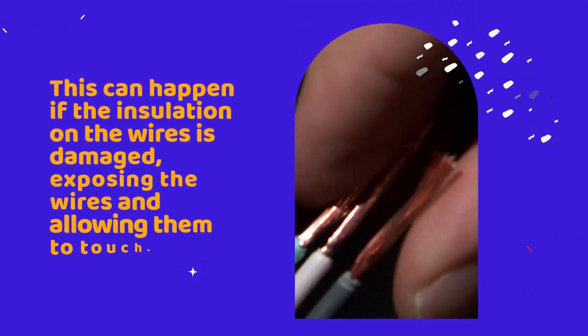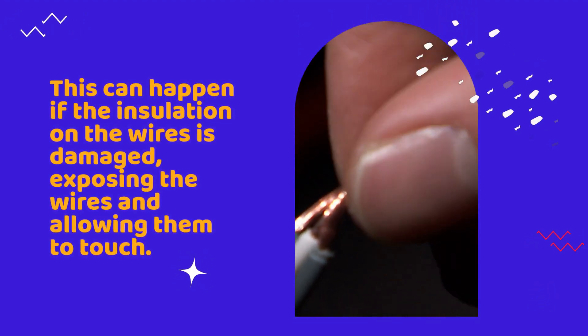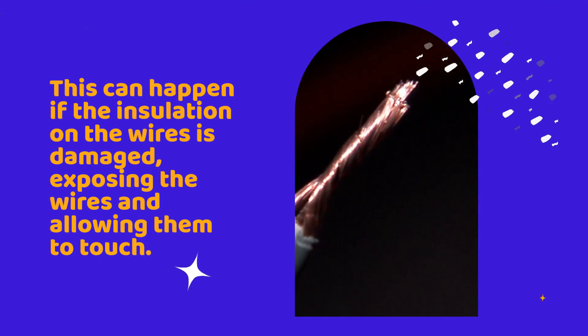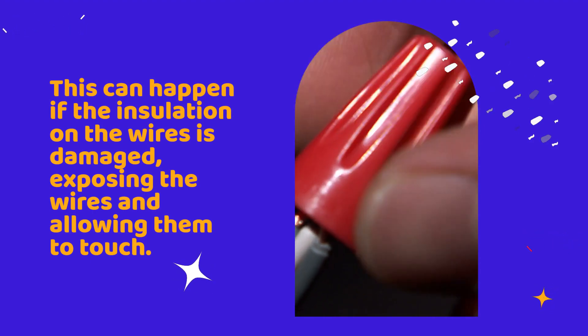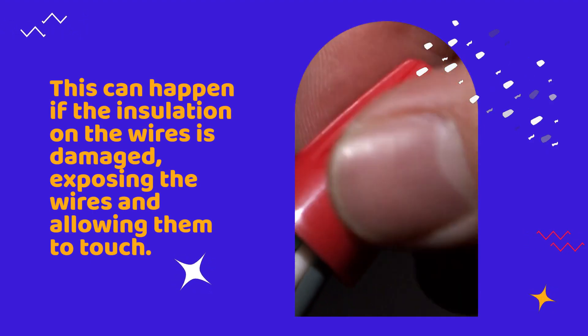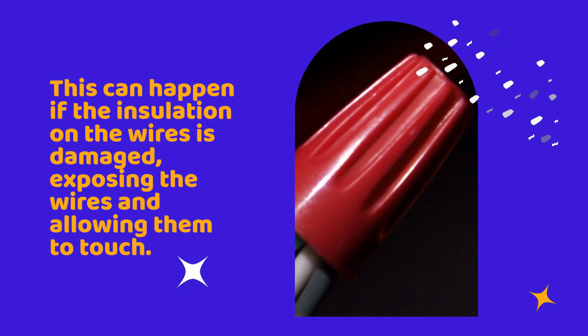Another potential issue is a ground fault, which occurs when the hot wire comes into contact with a grounded surface, like the metal casing of an appliance. This can happen if the insulation on the hot wire is damaged, causing it to touch the ground surface.